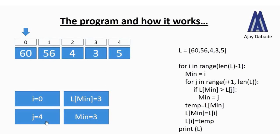Outside the loop, we swap the numbers. l[min] — that is l[3], which is 3 — is stored in a temporary variable called temp. Then l[i] (60) gets stored in l[3], and then temp (3) gets stored at index 0. So the values are now swapped.